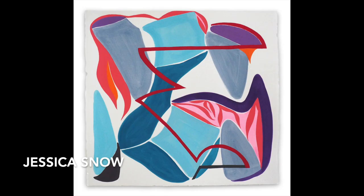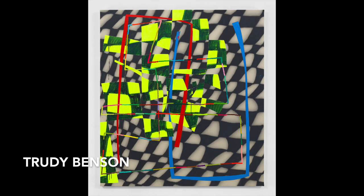American artist Jessica Snow uses bright, vivid colors with shape and texture in the tradition of geometric abstraction.